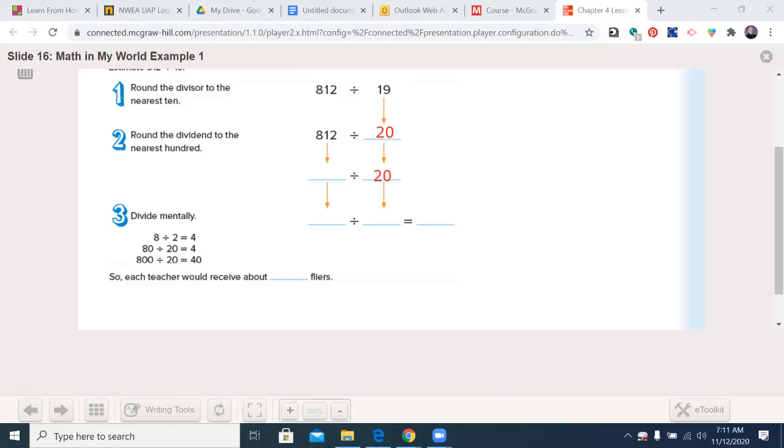Now step two, round the dividend to the nearest 100. Here's the hundreds placed at 8. The number to the right is a 1. 1 is less than 5, so it's going to stay at an 8. It's a 3-digit dividend, so it needs to stay 3 digits. So we add those zeros in. 800 divided by 20. Now at step three, you could divide mentally. I'm going to go ahead and type these in for you, and you should be writing these in of what we're doing. 800 divided by 20.